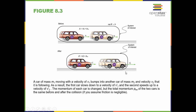So what kind of problems can we do with momentum? Here we have a car of mass 1 moving with a velocity v1 initial, and it bumps into another car with mass 2 and a velocity v2. As a result, the first car slows down to v1 final and the second speeds up to v2 final. The momentum of each car changes, but the total momentum of the two cars is the same. So initially, mass 1 times its velocity plus mass 2 times its velocity equals the total momentum of the system after the collision. The momentum before the collision equals the momentum after the collision.